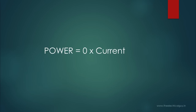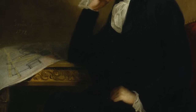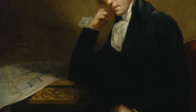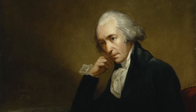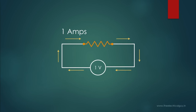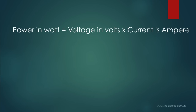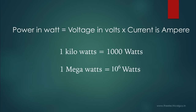Now let's learn about the unit of electric power. The unit of electric power is joules per second, or watts. The most commonly used unit of power is named watts, after the Scottish inventor James Watt, because of his contribution in steam engines and the development of the concept of horsepower. We also have bigger units like one kilowatt, which equals 1000 watts, and one megawatt, which equals 10 to the power 6 watts. Power can also be measured in horsepower, where one horsepower equals 745.7 watts.